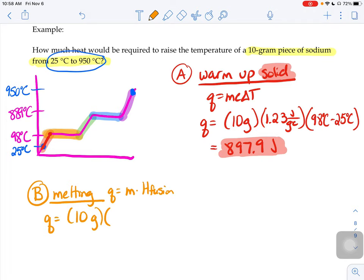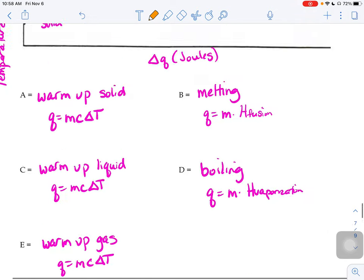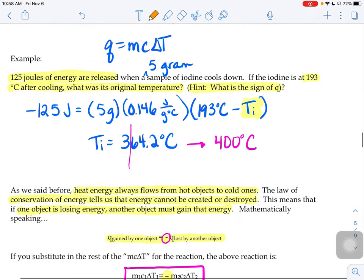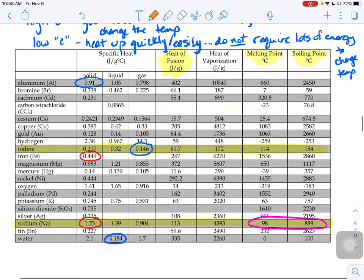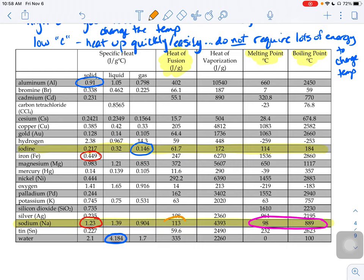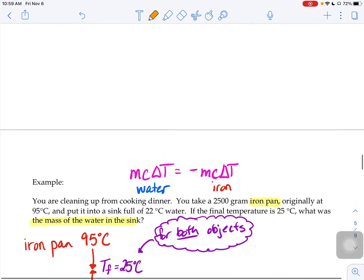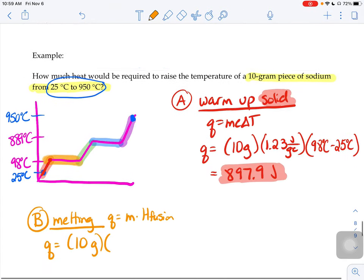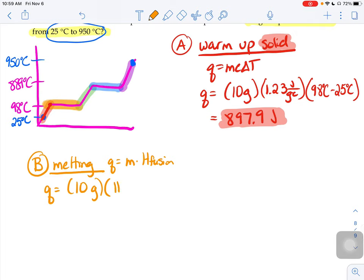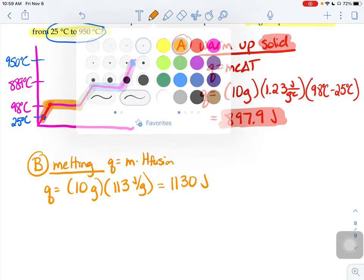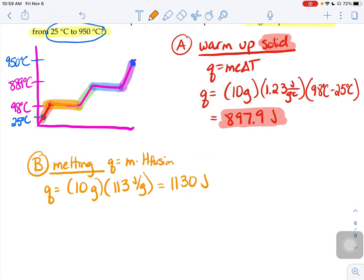But now I need for melting, the equation is Q is mass times heat of fusion. So I need to find sodium's heat of fusion number. So I go to my chart, and I look up sodium's heat of fusion number right here, 113 joules per gram. So we plug that number into my equation, and get 1130 joules. So I've made it across here.